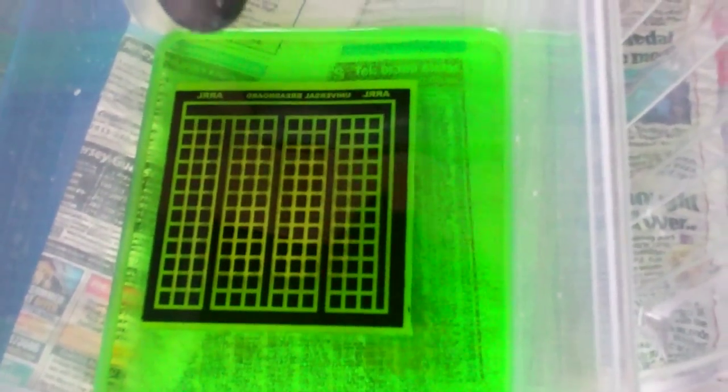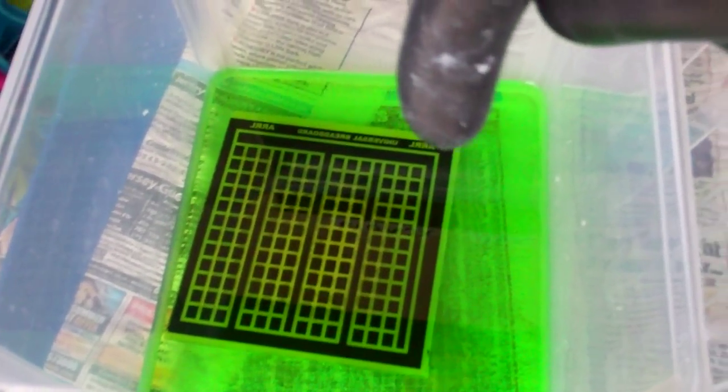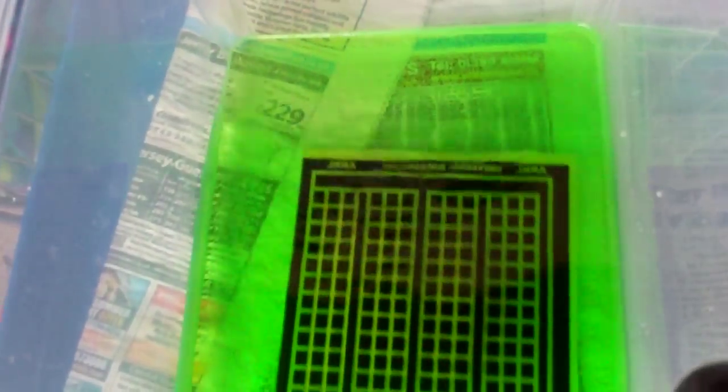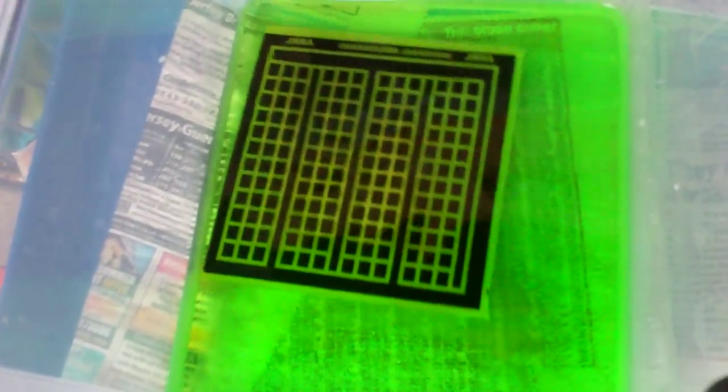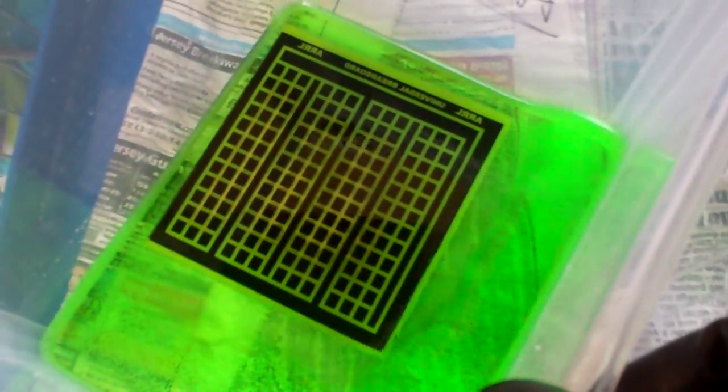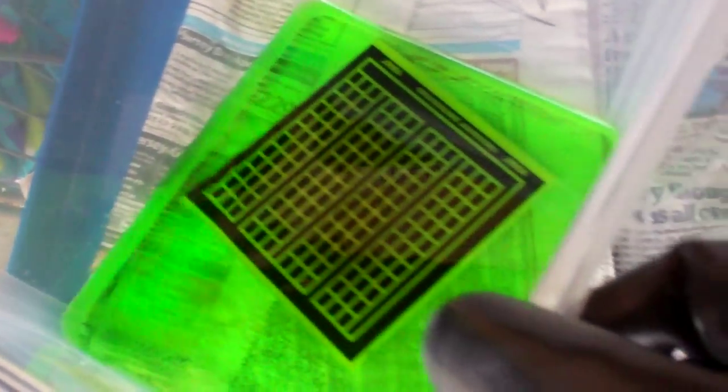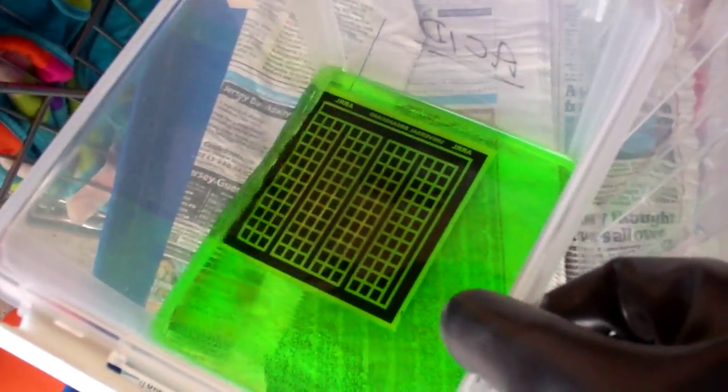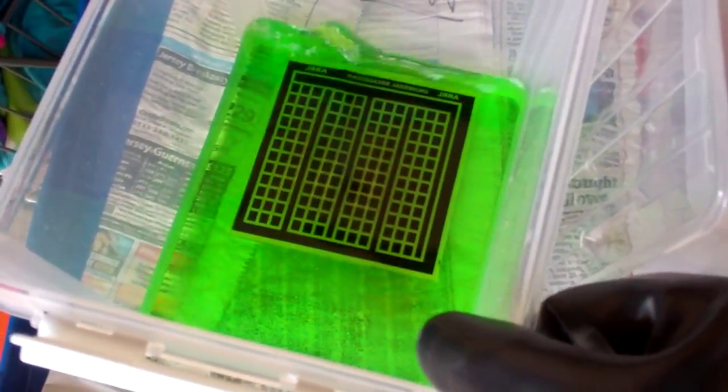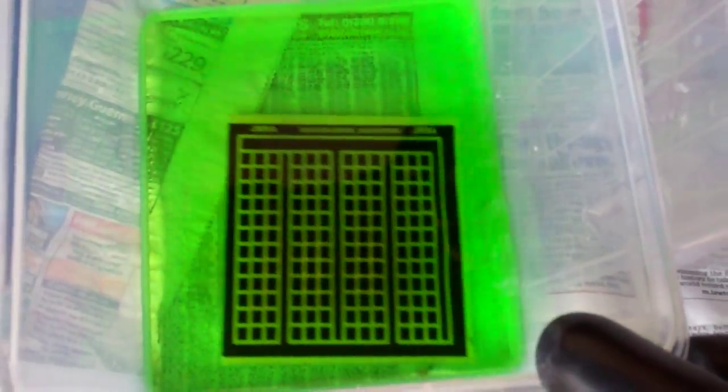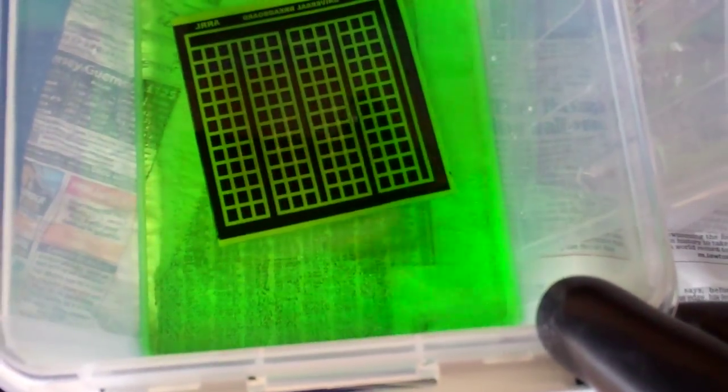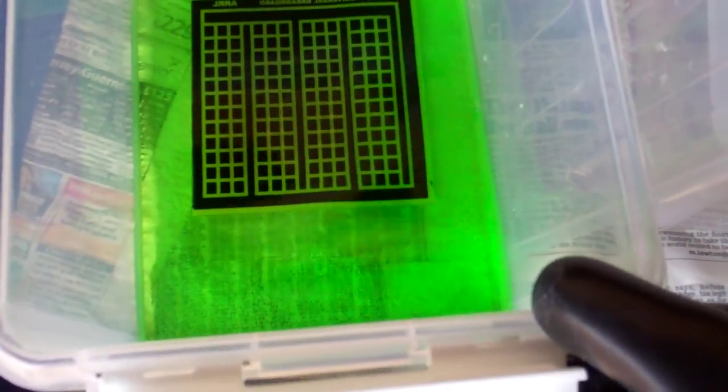It always seems to etch first around the outside edges, and then it kind of gets slowly spiraling in towards the center, which I guess makes larger boards harder to etch by home processes. And we're almost there. Very close to it. It's amazing. You can actually see the copper slowly disappearing. It's a real-time process.